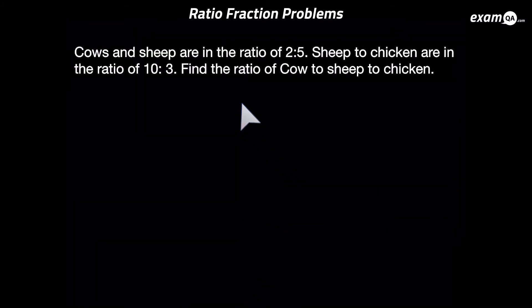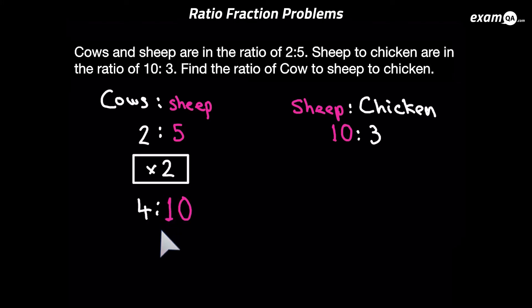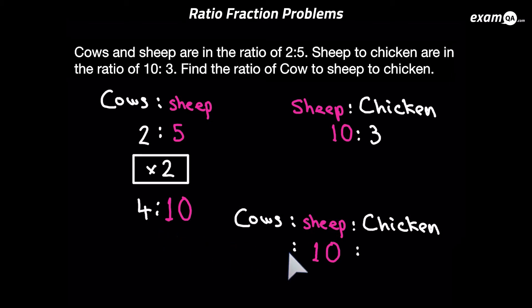Let's try another question of this type. Cows and sheep are in the ratio two to five, and sheep to chicken are in the ratio ten to three. We need to work out the ratio for all three. Both ratios have sheep in common, so we make the sheep values equal. Sheep is five in one and ten in the other, so we simply multiply the left-hand ratio cows to sheep by two, giving four to ten. Now sheep is ten in both ratios, so the full ratio is cows to sheep to chicken: four to ten to three, which can't be simplified further.